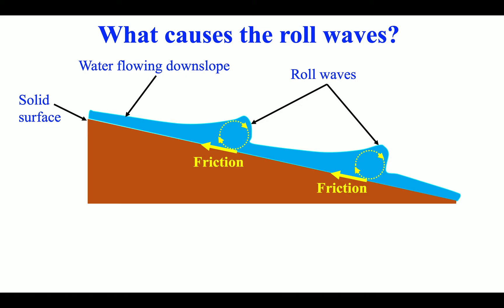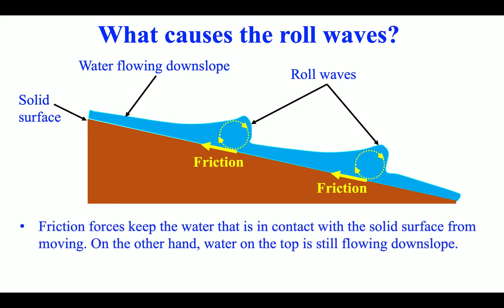What causes the roll waves? Friction forces keep the water that is in contact with the solid surface from moving. On the other hand, water on the top is still flowing downslope. The effect of friction causes rolling motion of water, or roll waves.